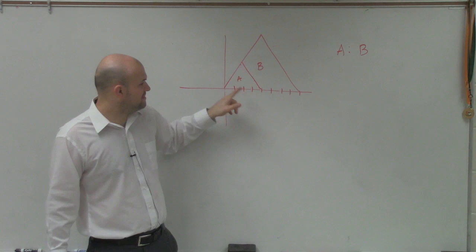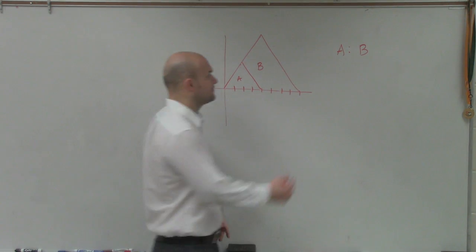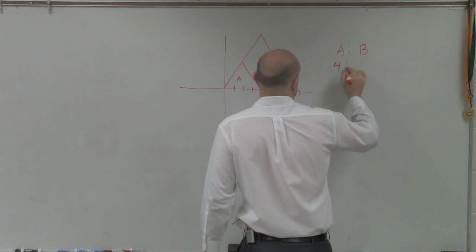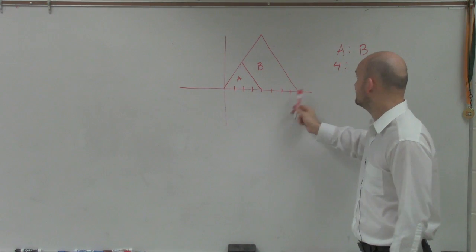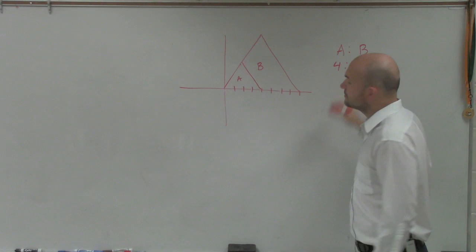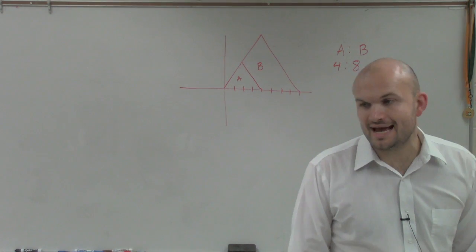So I can say from A to B, A is 1, 2, 3, 4. And then B is 1, 2, 3, 4, 5, 6, 7, 8. So my ratio is 4 to 8.